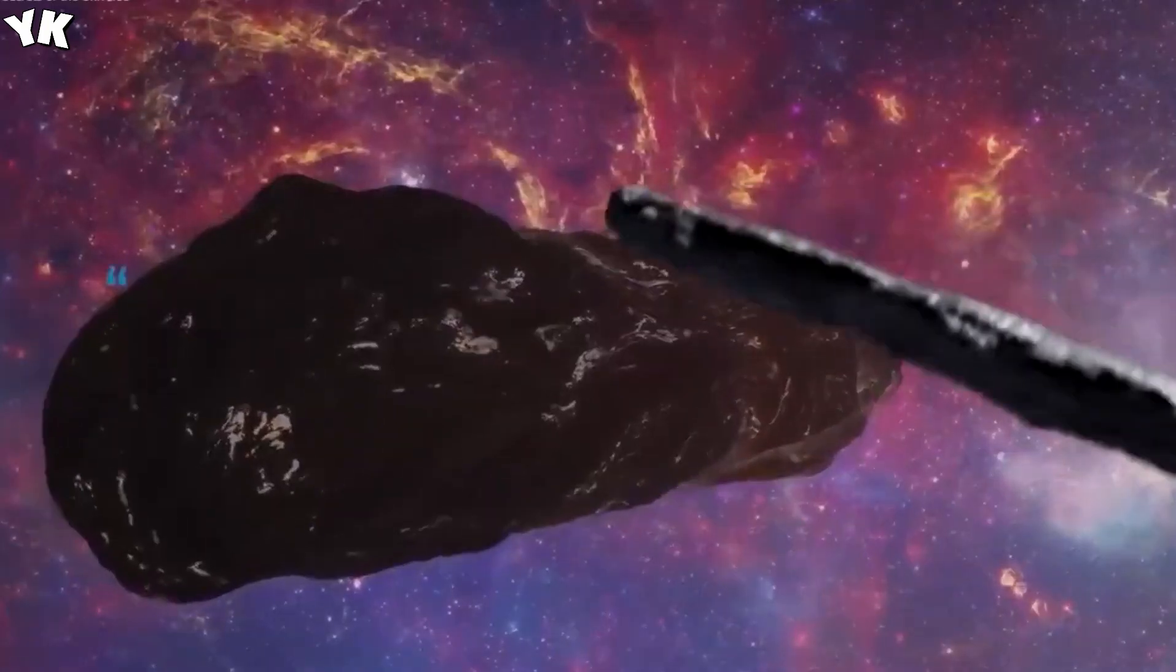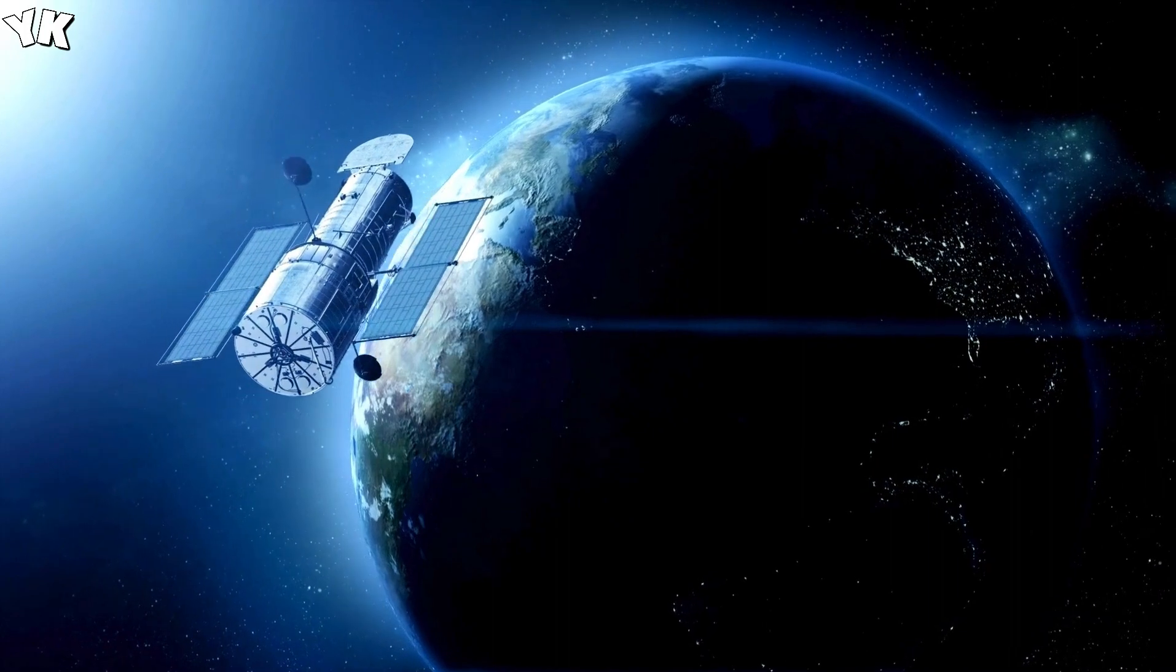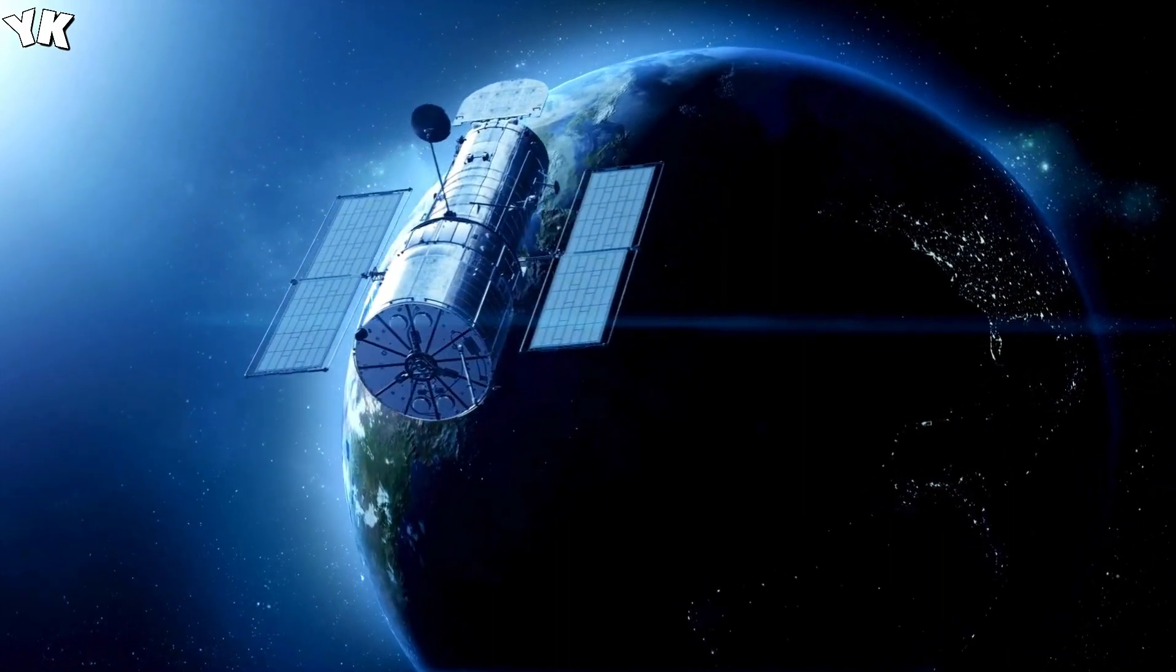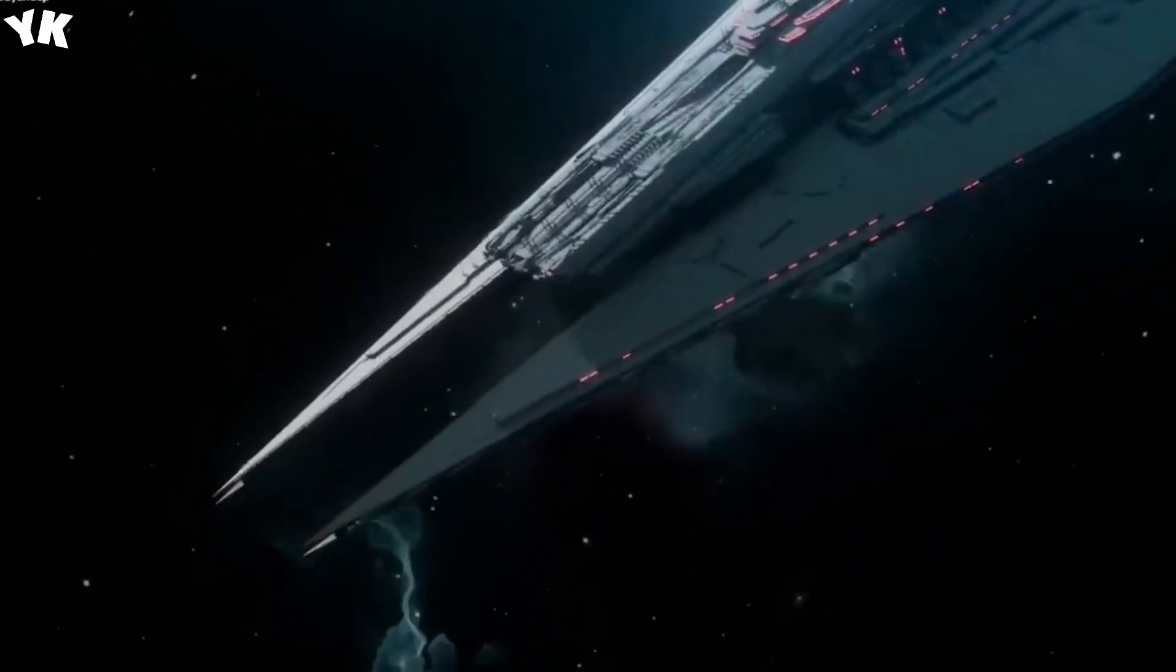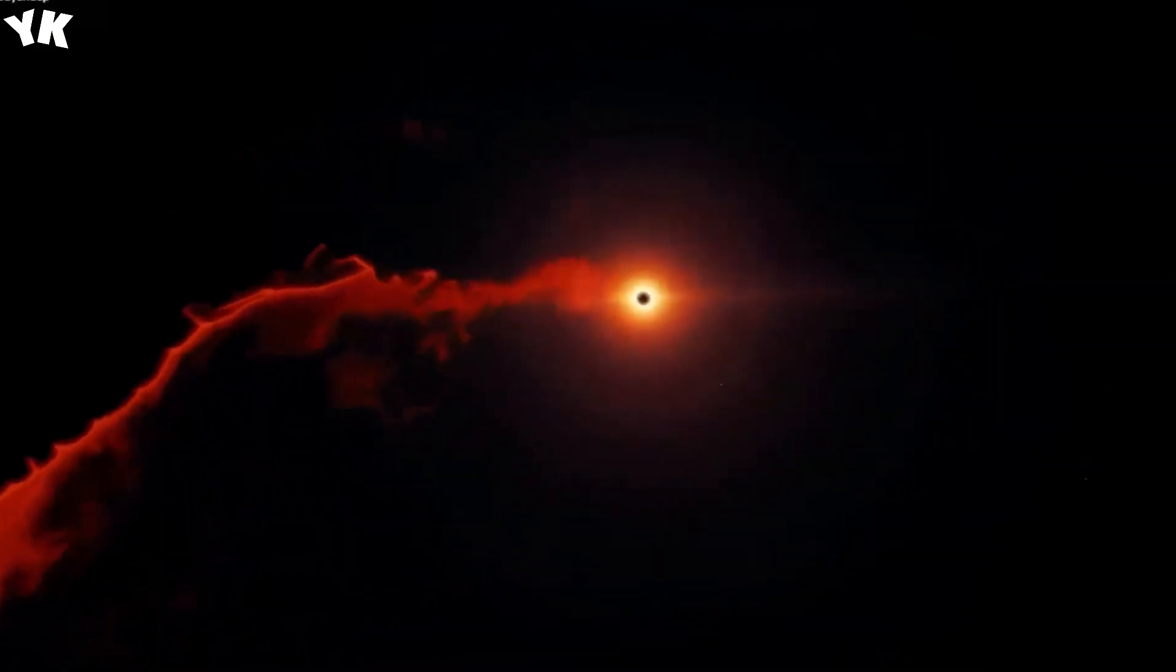Instead of the familiar elliptical orbits we see of asteroids and comets, Oumuamua, with uncanny audacity, chose a hyperbolic path, unequivocally hinting at its otherworldly origin. The deeper our telescopes peered, the more Oumuamua eluded comprehension.